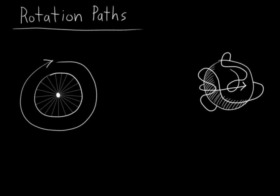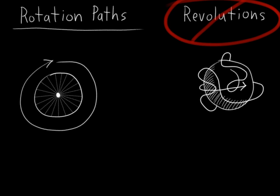But in 3D, we have no such guarantees. The path could be anything, and it certainly doesn't have to form a closed loop. And that's why I call this concept rotation paths, and not revolutions. Rotations, and in particular 3D rotations, are a lot more complex than that.